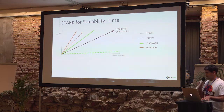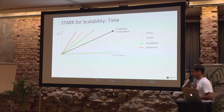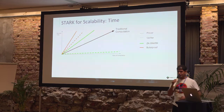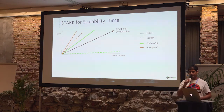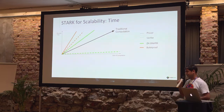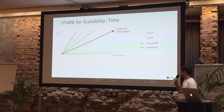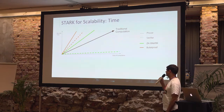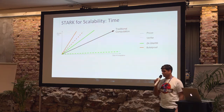Some of you know Bulletproofs. The main drawback of Bulletproofs compared to STARKs and SNARKs is that they are not succinct. That means both the prover and the verifier usually take longer to run than the computation itself.